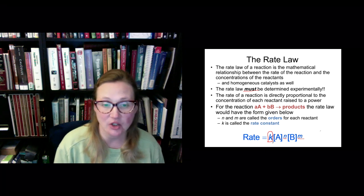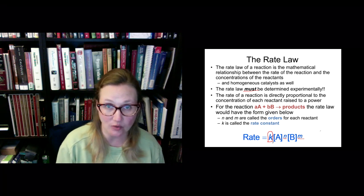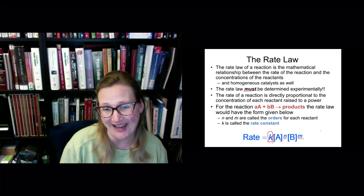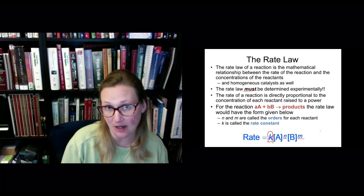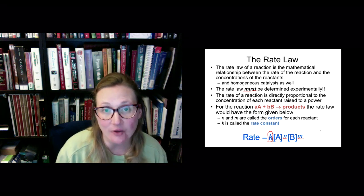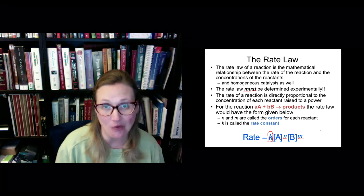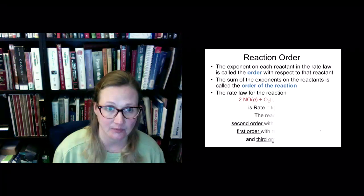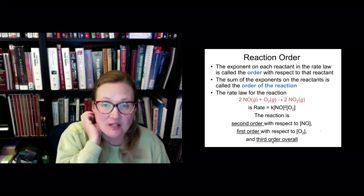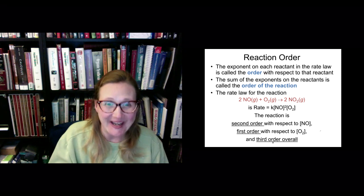Imagine a reaction: A plus B goes to products. We can formulate a rate law based on this reaction where rate is equal to the rate constant K times the concentration of A to the n power times the concentration of B to the m power. If you want to know the overall rate of the reaction, you add them up — so n plus m equals the overall order of the reaction. The exponent on each reactant gives the order with respect to that reactant, and the sum of those exponents is the order of the reaction.